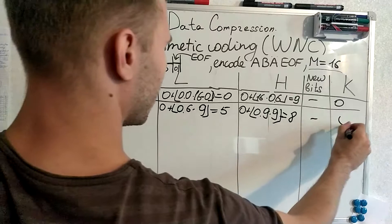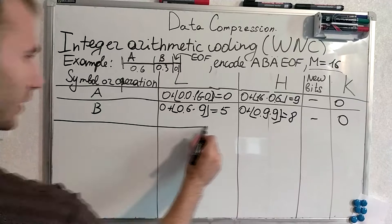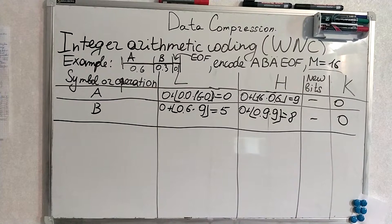Alright, now it's time for the rescaling because our higher threshold is smaller or equal than M divided by 2.